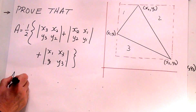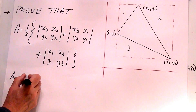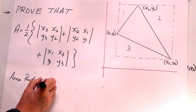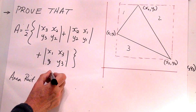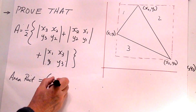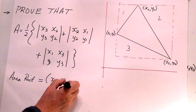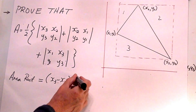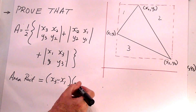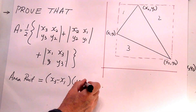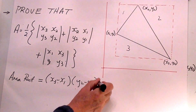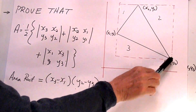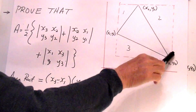First of all, the area of the rectangle will be equal to (x3 minus x1) times (y2 minus y3). It's y2 and y3, so it gives us that distance there.